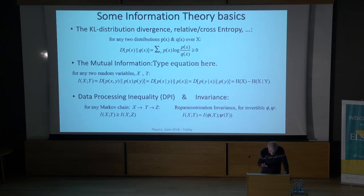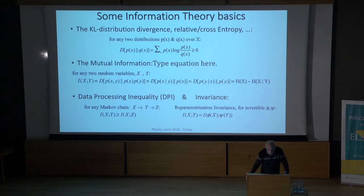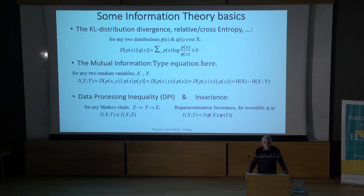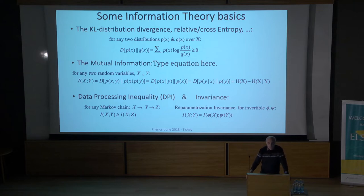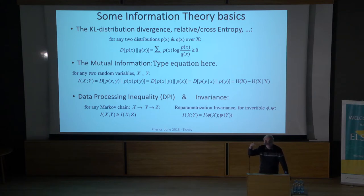I'm going to characterize this information flow through the network by measures of information. I need two things: the KL divergence, which is the average log-likelihood ratio between two distributions—a measure of similarity between distributions—and mutual information, which is the uncertainty removed about one variable when I know another. If they're independent, this is zero; if strongly dependent, I get essentially the entropy of the smaller variable. One very important property is the data processing inequality: information cannot increase when I go along a Markov chain.